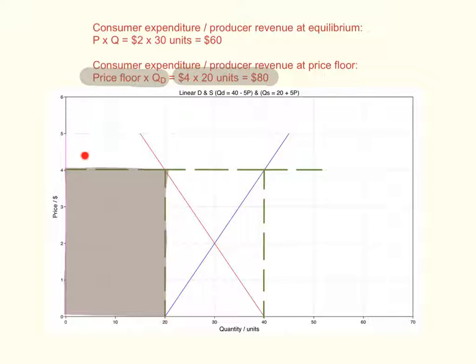This is the area shaded in brown. You can see there has been an increase in consumer expenditure by $20. This is one reason governments impose price floors—to try and get more revenue for producers.